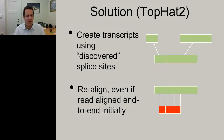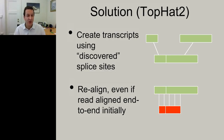In TopHat 2, the solution is to create transcripts using the splice sites discovered in the initial alignment round, then take reads that aligned end-to-end initially and ask whether there is a spliced alignment spanning one of the discovered introns. If so, realign that read to what is usually the correct copy. This second-pass algorithm ensures reads misdirected to pseudogenes are rescued and placed at the correct gene locus.